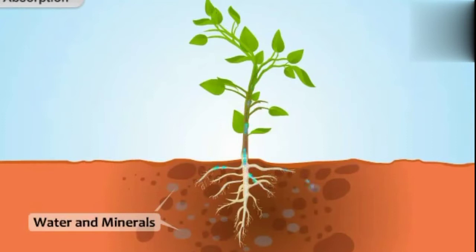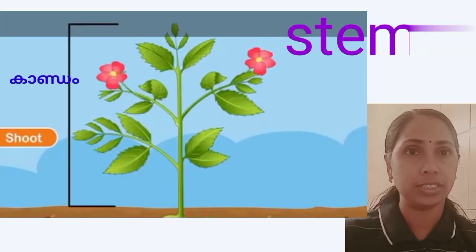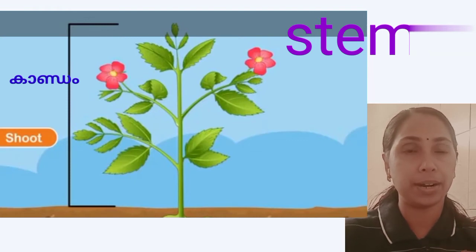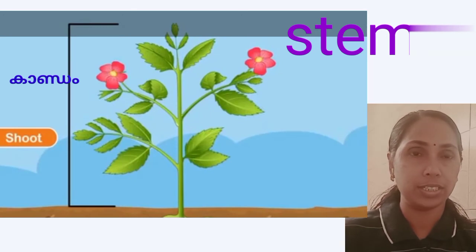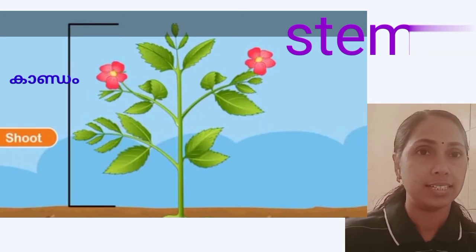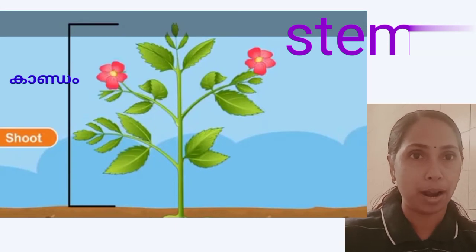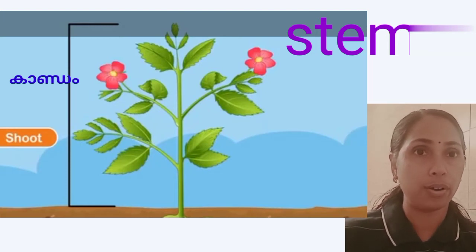The part of the plant which grows above the soil is called its stem or shoot. The part of the plant which grows above the soil is called shoot or stem.